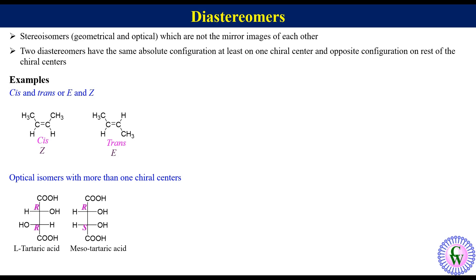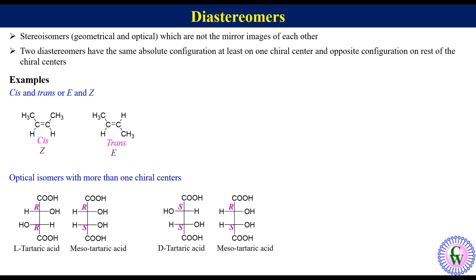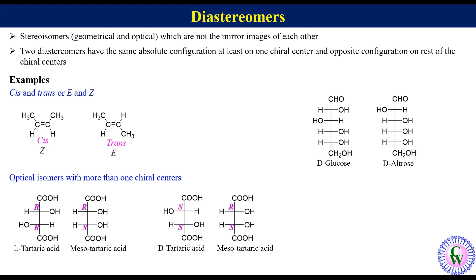Similarly, D-tartaric acid and meso-tartaric acid are also a pair of diastereomers. Another example is the pair of D-glucose and D-altrose.